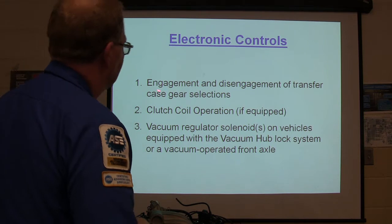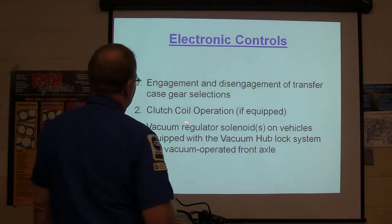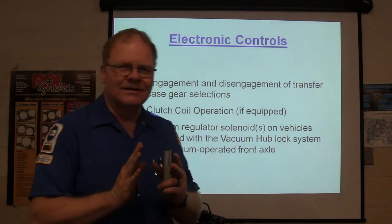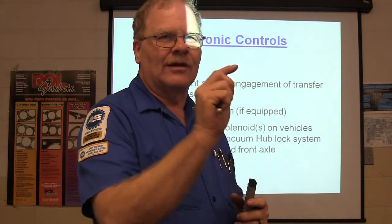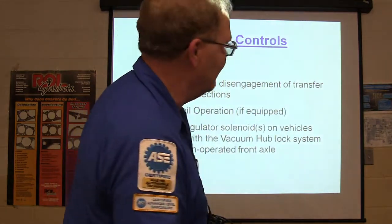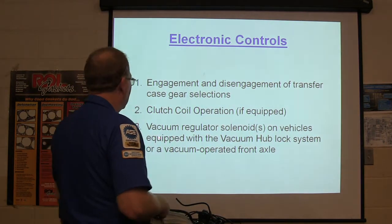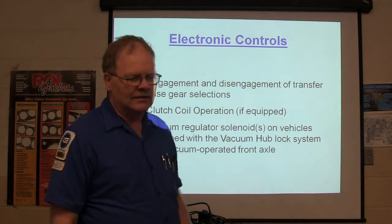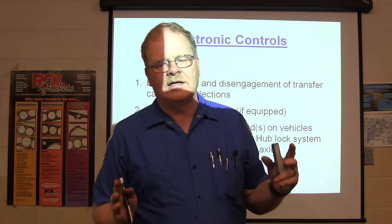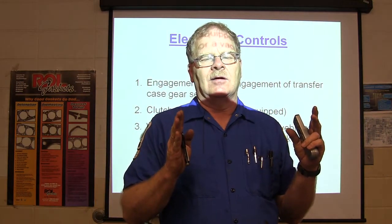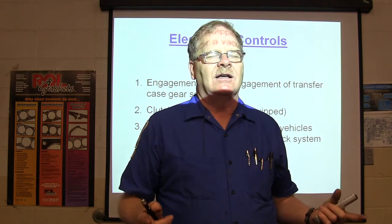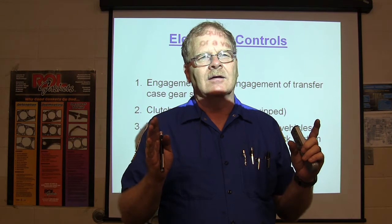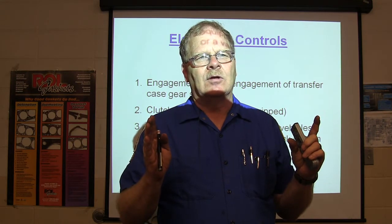Electronic controls handle engagement, disengagement, transfer gear selections, and clutch coil operation if equipped. A clutch coil is kind of like an air conditioner clutch that enables it to shift on the fly — you push a button on the dash and it goes into four-wheel drive while you're moving. Vacuum regulator solenoids are on vehicles equipped with a vacuum hub lock system. On late-model Fords, when you remove vacuum from the hubs, they lock; when you apply vacuum, they unlock.